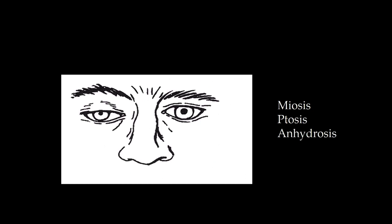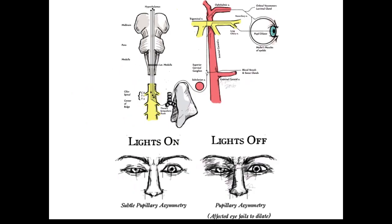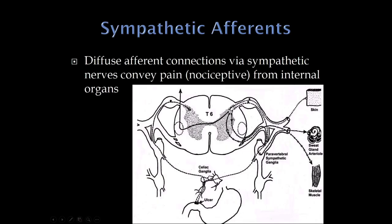Horner's syndrome triad: miosis (small pupil), ptosis (droopy eyelid), and anhidrosis (lack of sweating). The typical board question involves a tumor at the apex of the lung — a Pancoast tumor in smokers. I've seen quite a few of these — the patient is seen for something else and I notice Horner's syndrome, which should always prompt investigation of the lungs for lung cancer. For now, recognize that a tumor at the apex of the lung would disrupt these preganglionic fibers.